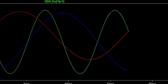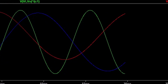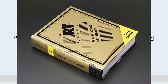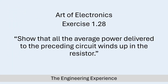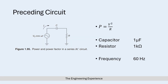Hello and welcome back to my channel. Today I'm going through exercise 1.28 from the Art of Electronics. In this exercise we need to show that the average power delivered to a RC circuit winds up in the resistor. The circuit presented is on figure 1.95 in the book. The capacitor value is 1 microfarad, the resistor value is 1 kilo ohm, and the frequency is 60 hertz.